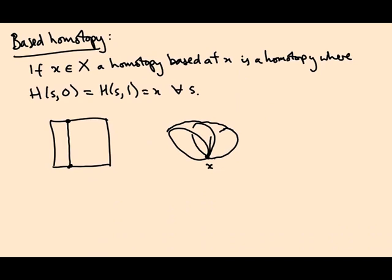The advantage of this is that if you have two loops passing through the same point, then you can concatenate them right? You can do this one followed by that one. Whereas if you have two loops that don't pass through the same point there's no way to concatenate them into one loop. This is what's going to give us the algebraic group structure on the fundamental group.